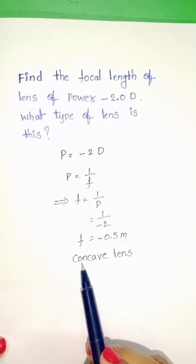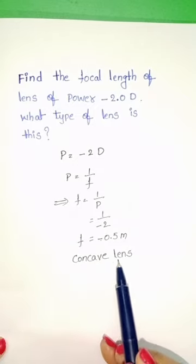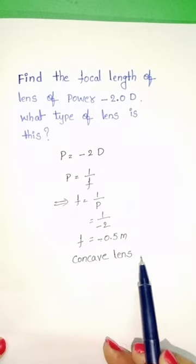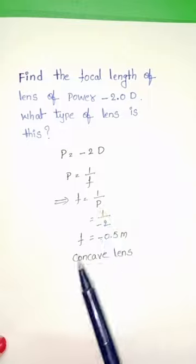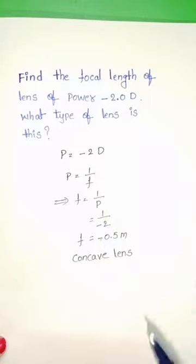Focal length is negative for the concave lens. So, the lens is a concave lens.